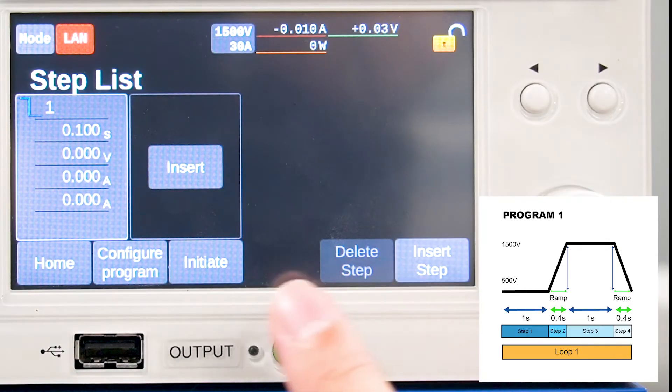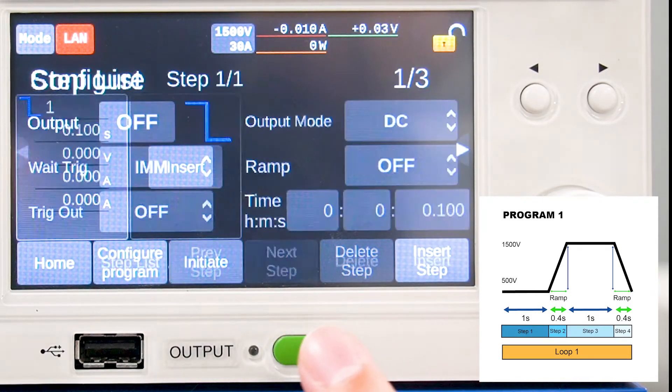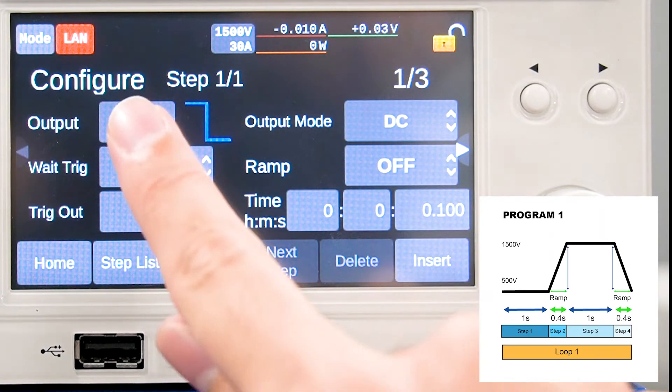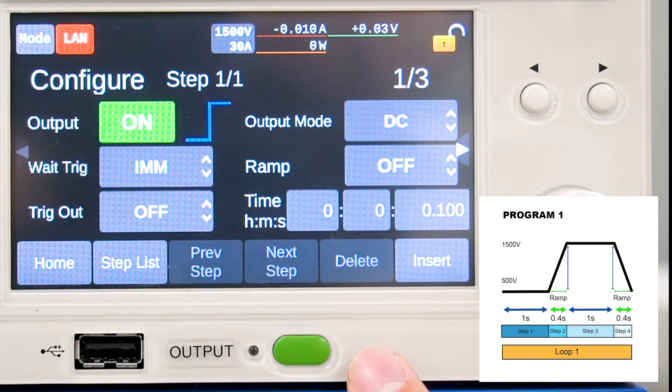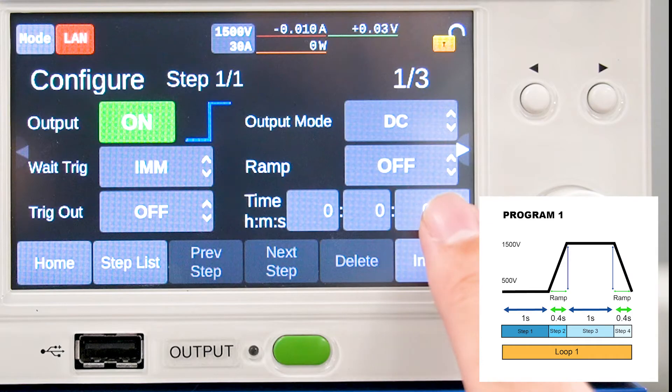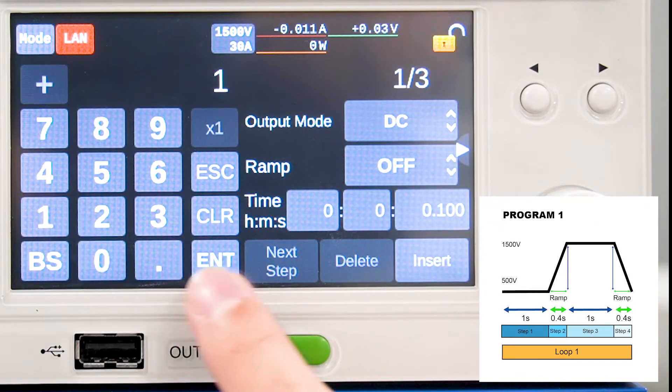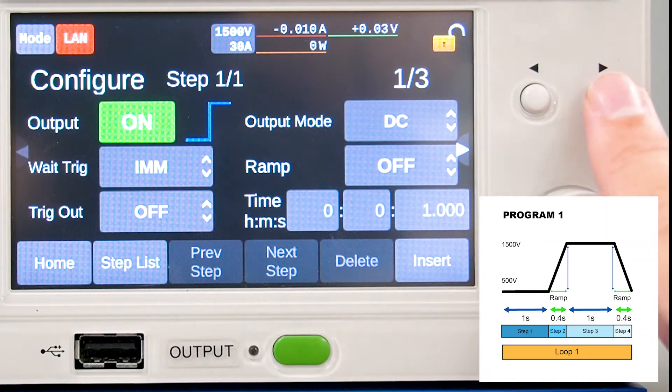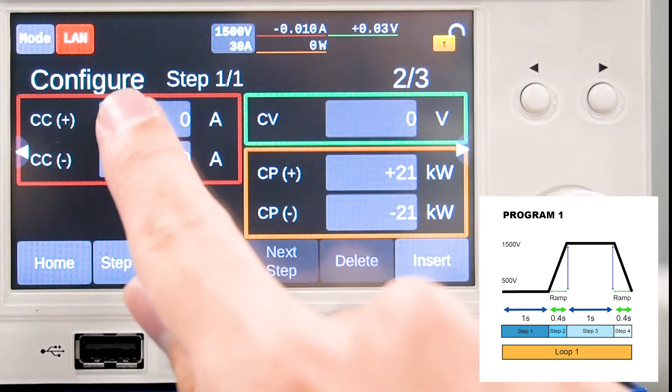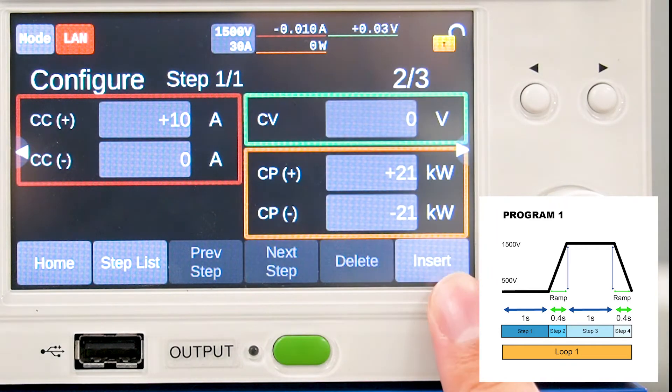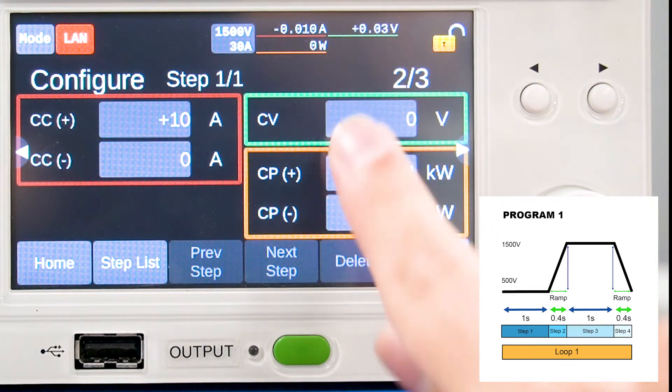Now, we'll edit step 1. Set output on, time to 1 second, current to 10 amperes and voltage to 500 volts.